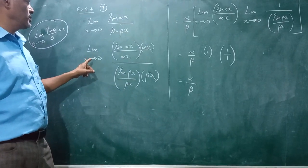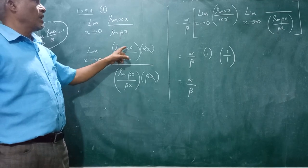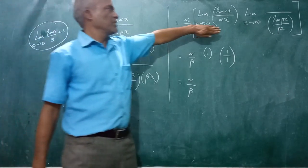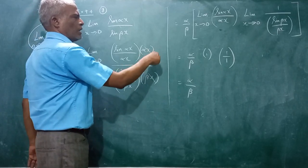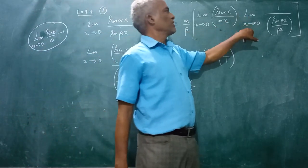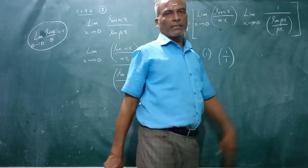So the balanced term will be limit x tends to 0, sin alpha x divided by alpha x, first term, and the second term is in the denominator, that means into 1, 1 divided by, so limit x tends to 0, 1 divided by sin beta x by beta x.